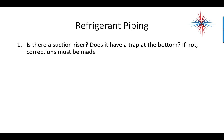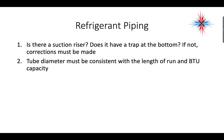We need to take a look at refrigerant piping. Is there a suction riser? Does it have a trap in the bottom? If not, it should. Tube diameter must be consistent with the length of run and the BTU capacity — the more BTUs, the larger the suction line has to be.